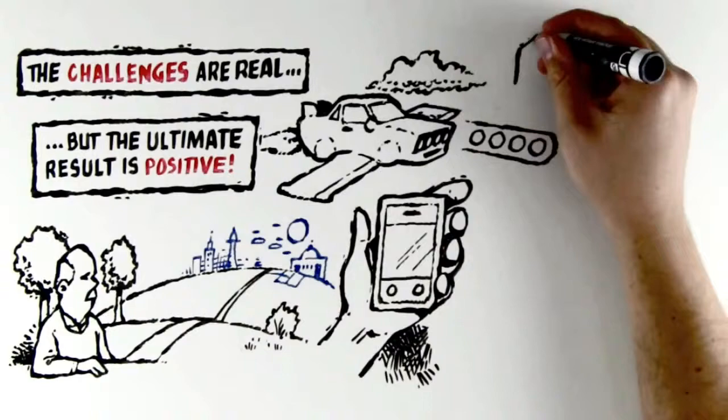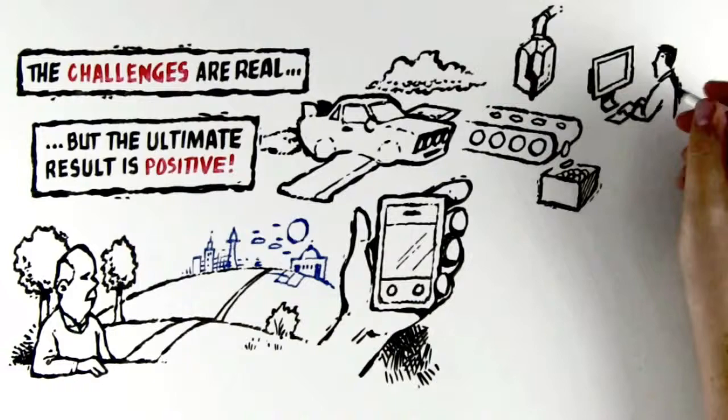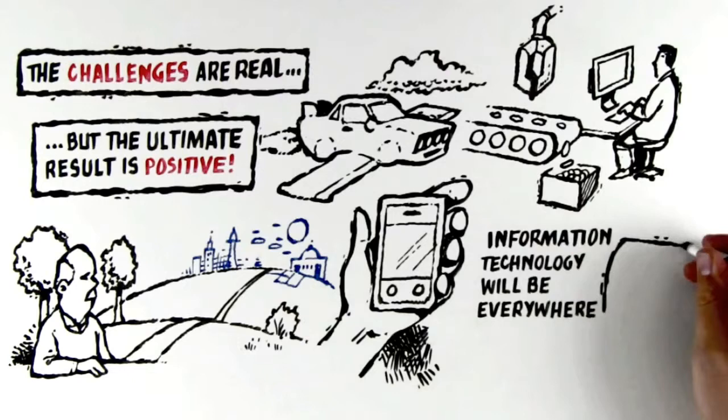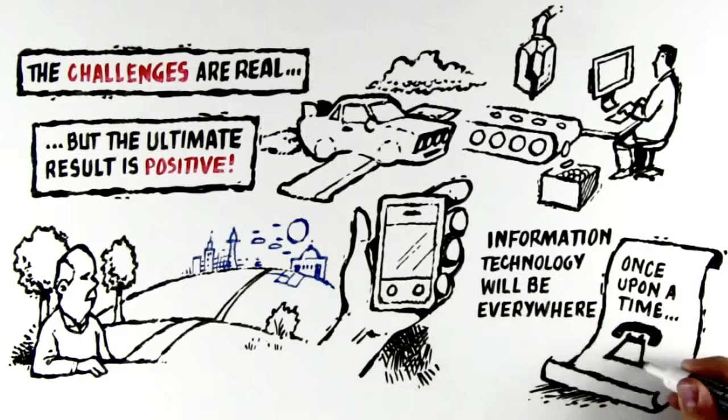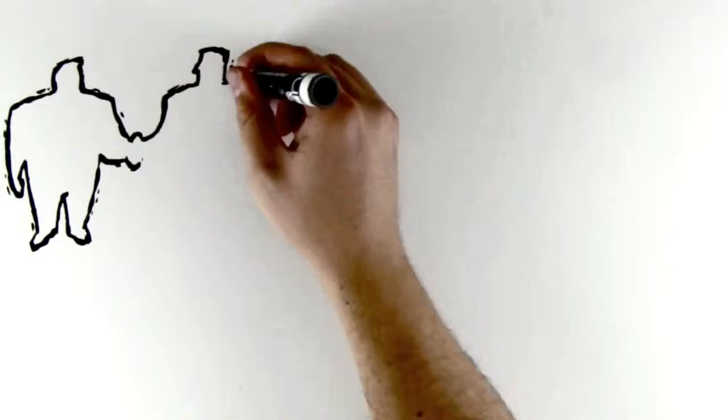In the future, computers and humans will increasingly split duties according to what each does well. Information technology will be everywhere, like electricity. It will be a given, so fully a part of our lives that we will struggle to describe life before it to our children. When exposure meets opportunity, the possibilities are endless.